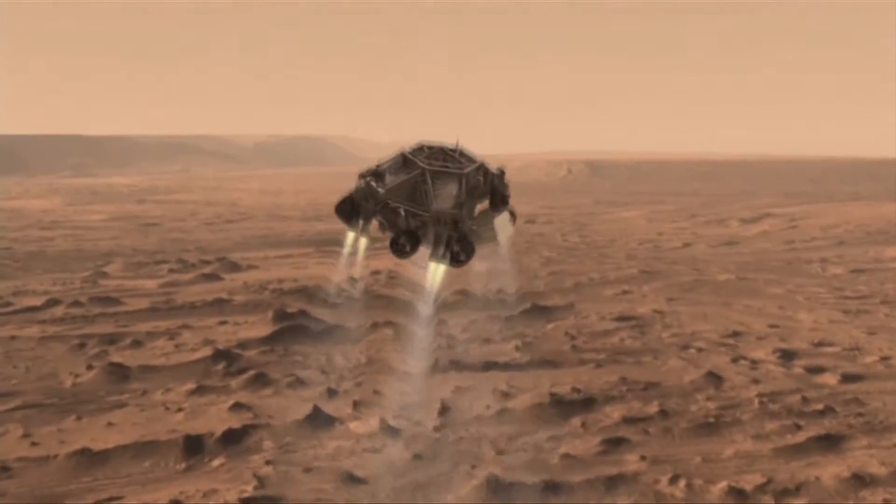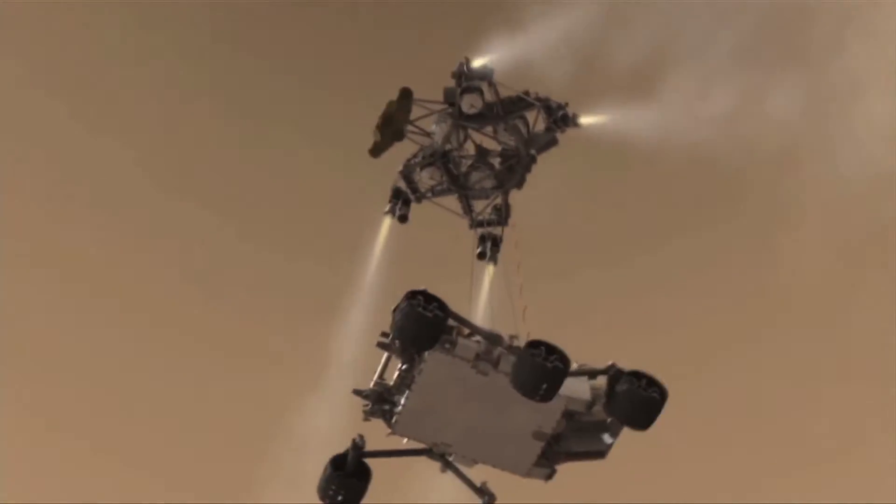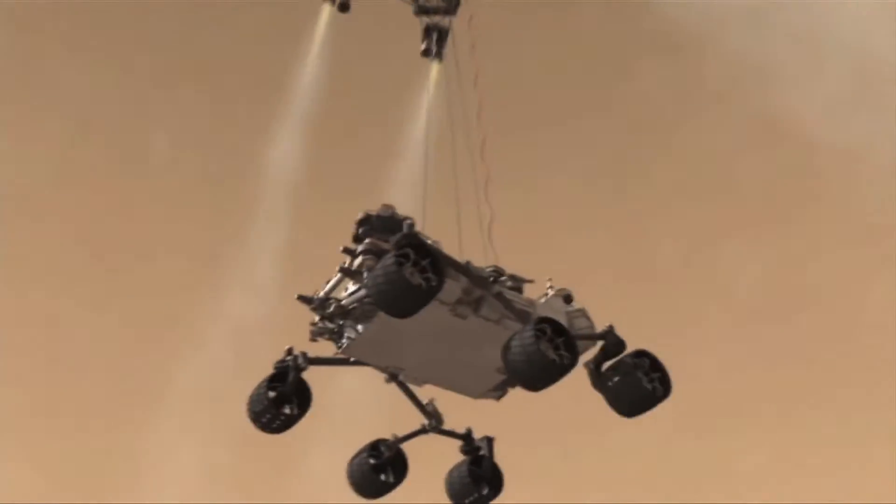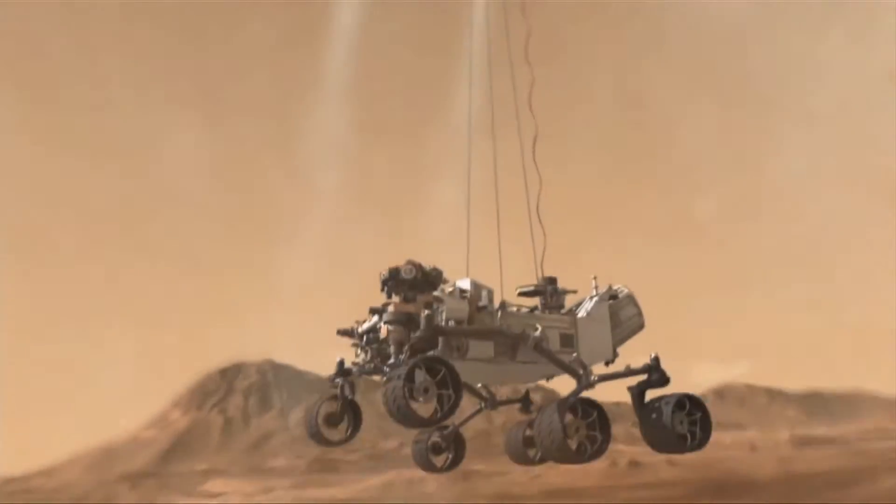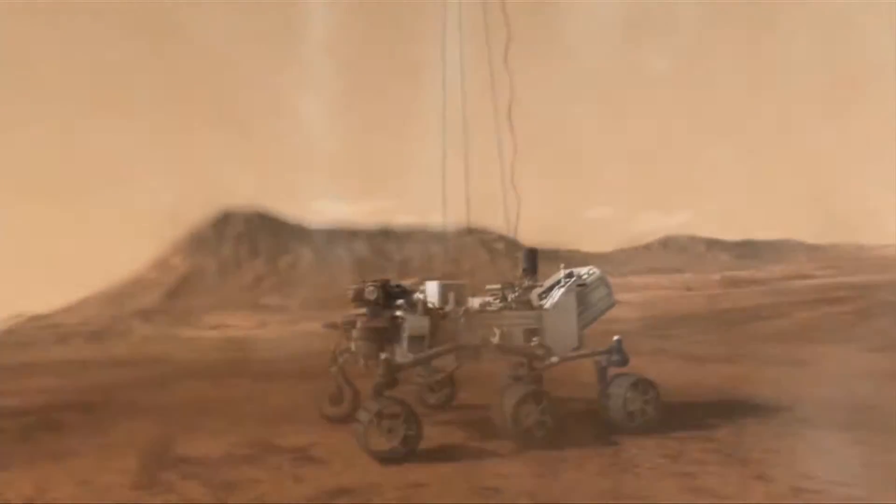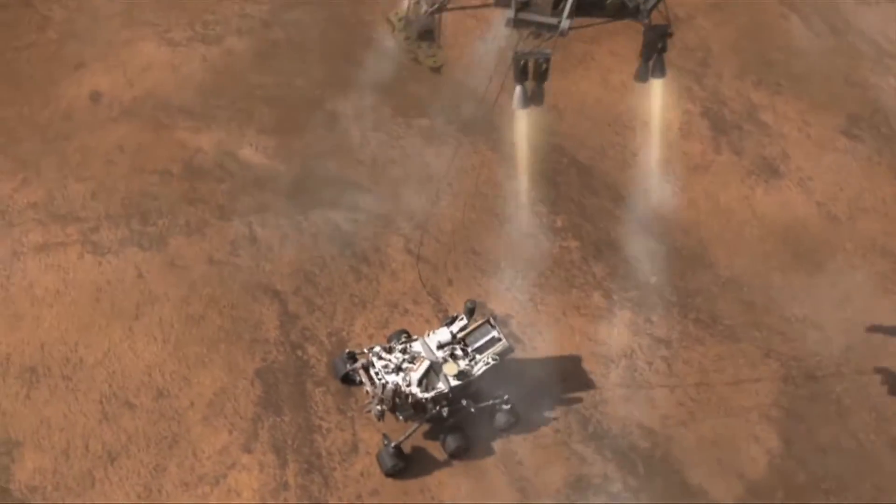The rocket crane then lowers the Mars Curiosity rover on a 21-foot cable down safely to the surface. As soon as it lands, it has to cut the sky crane away and fly away to a safe distance.